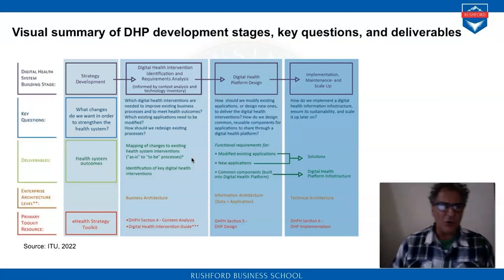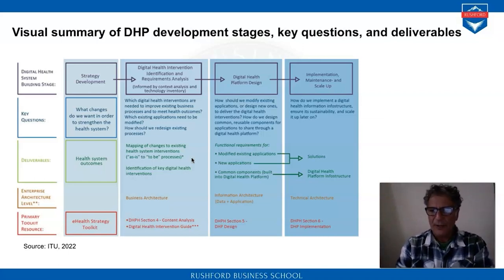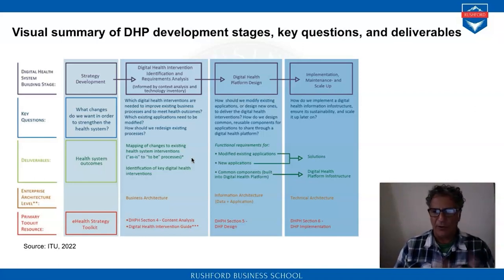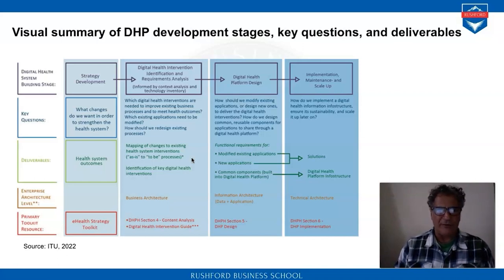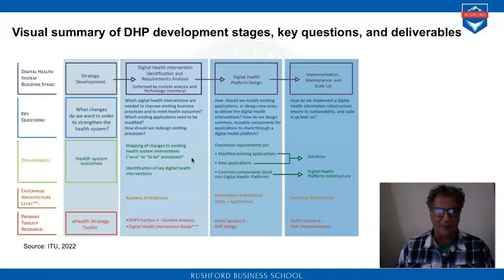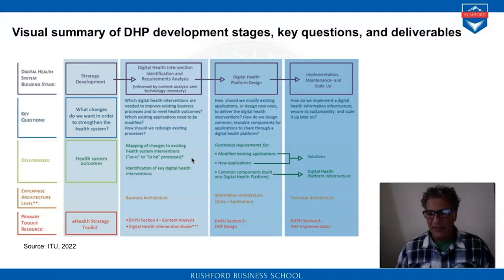Here is a visual summary of the DHP development stages, key questions, and deliverables, to understand the structure of the platform. Generally, we have the digital health system building stages: strategy development, digital health intervention identification and requirements analysis, digital health platform design, and finally the implementation, maintenance, and scale-up of the platform. There are key questions to address when developing a digital platform in healthcare.